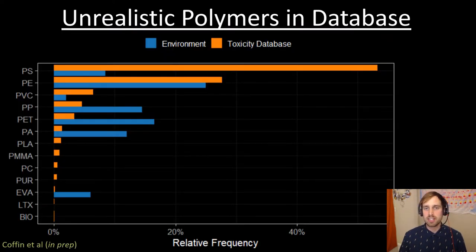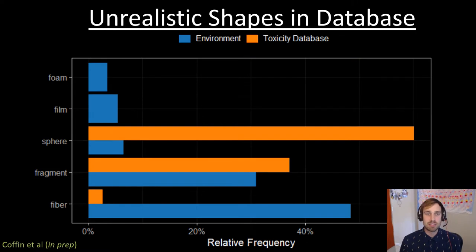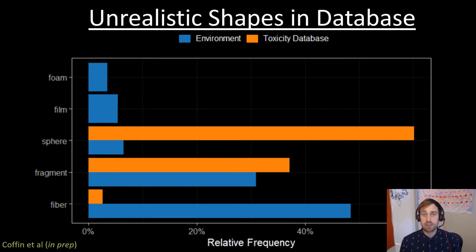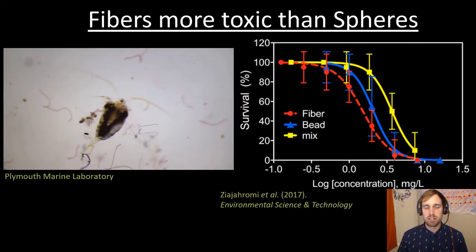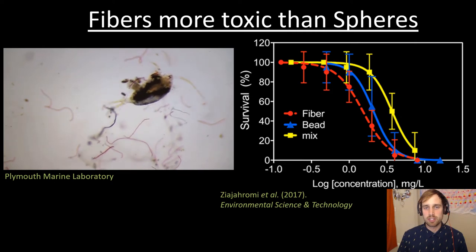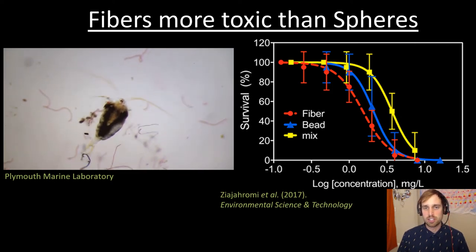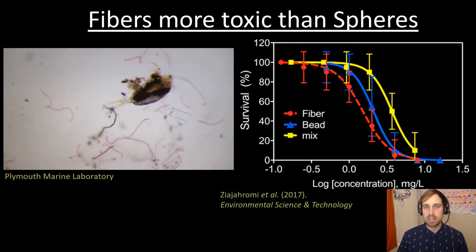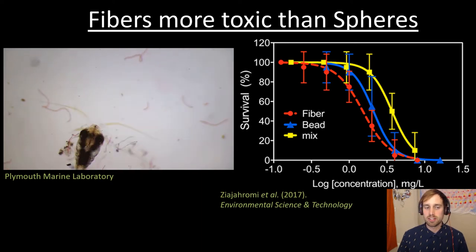Comparing polymers in the toxicity database to those in the environment, there's a mismatch in the relative proportions, with an over-representation of polystyrene and an under-representation of polyamide in the toxicity database. The same mismatch holds true for shapes, with a disproportionate number of studies focused on spheres and very few focused on fibers. Laboratory experiments demonstrate that fibers can be more toxic than spheres at the same exposure concentrations by mass, potentially due to mechanisms that cannot be captured in the alignments.